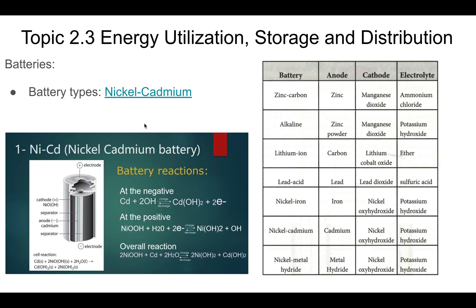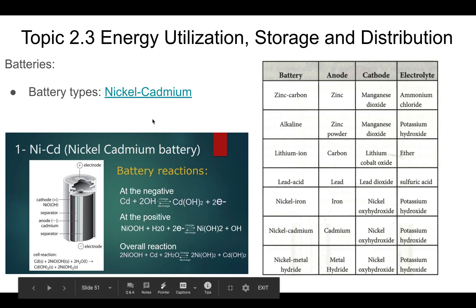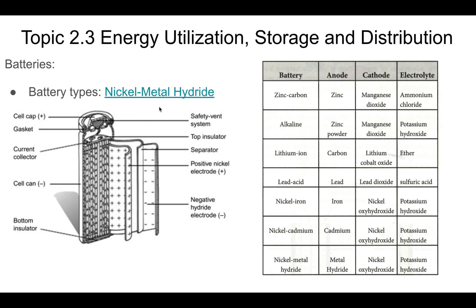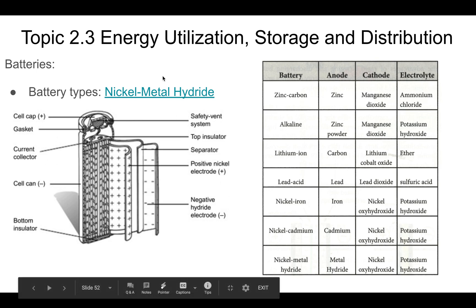Nickel cadmium is another type of battery — watch the video to understand how it works. Here are the chemical reactions for that. Cadmium is a problem because it's a heavy metal, which is toxic. And finally, nickel metal hydride — here's a schematic of that. Go ahead and watch the video and it'll give you some information about it.